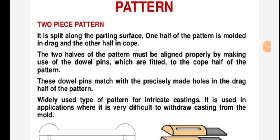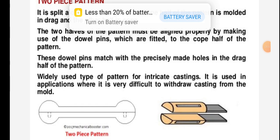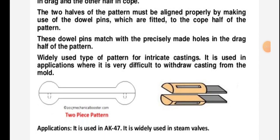The two piece pattern is split along the parting surface. One half of the pattern is molded in the drag and the other half is in the cope. The two halves of the pattern must be aligned properly by making use of dual pins, which are fitted to the cope half of the pattern. These dual pins match precisely with holes in the drag half. This is a widely used type of pattern for intricate castings, used in applications where it is very difficult to withdraw the casting from the mold.